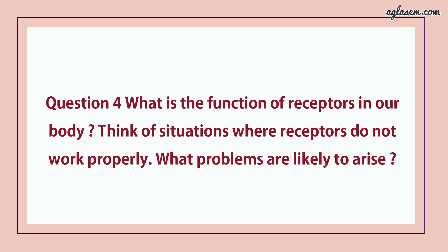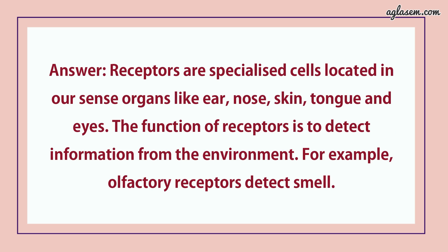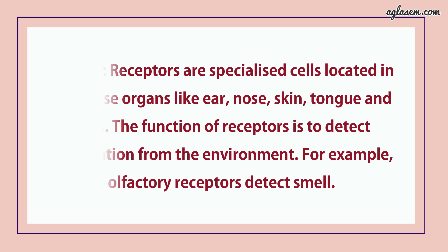Question number 4 says, what is the function of receptors in our body? Think of situations where receptors do not work properly. What problems are likely to arise? Answer is: receptors are specialized cells located in our sense organs like ear, nose, skin, tongue and eyes. The function of receptors is to detect information from the environment. For example, olfactory receptors detect smell.